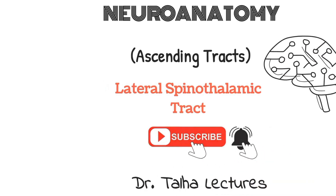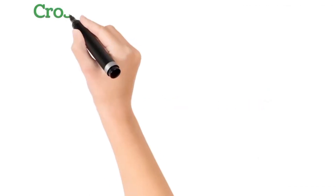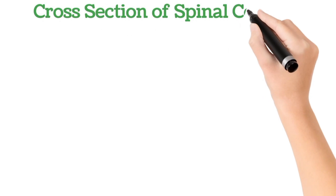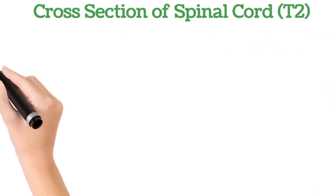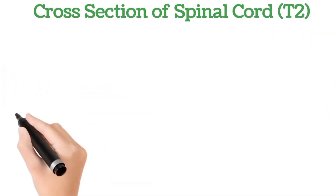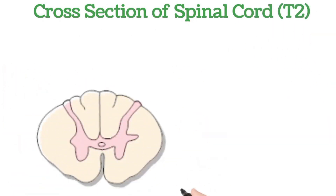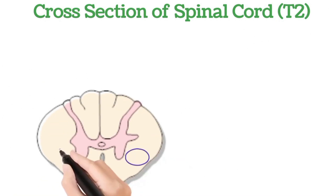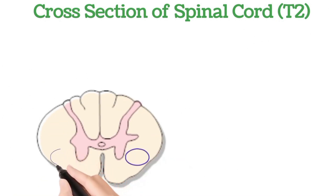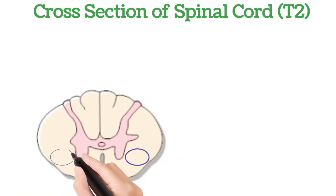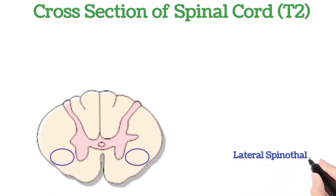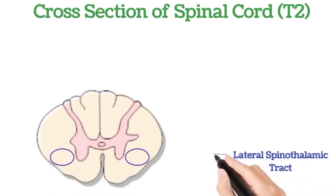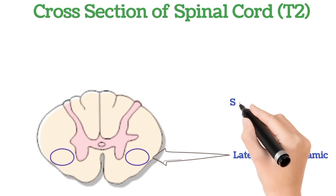This is the cross section of spinal cord at the level of T2. The lateral spinothalamic tracts are present in the lateral part of white matter of the spinal cord. These are important ascending tracts involved in carrying sensations of pain and temperature. As the name suggests, these tracts pass through the spinal cord to the thalamus.